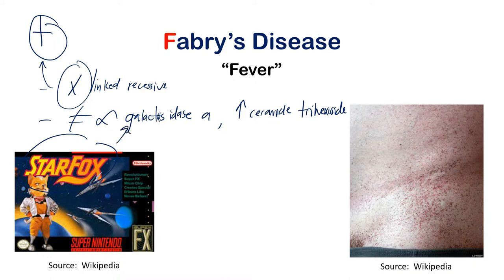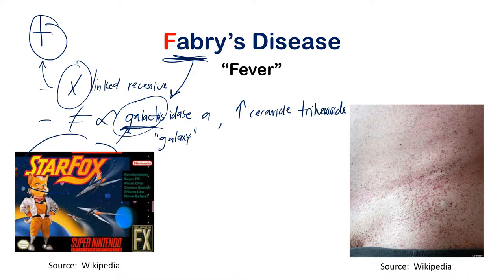The reason I use the Star Fox mnemonic is because 'galactosidase' sounds like 'galaxy.' When I see Fabry's I think of Star Fox, and then I can remember we're talking about alpha-galactosidase — the 'alpha galaxy' — because it just sounds like something that would be in space.